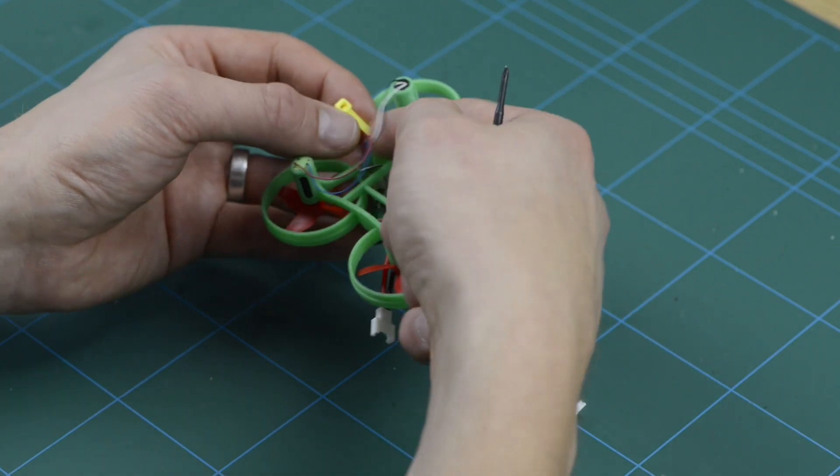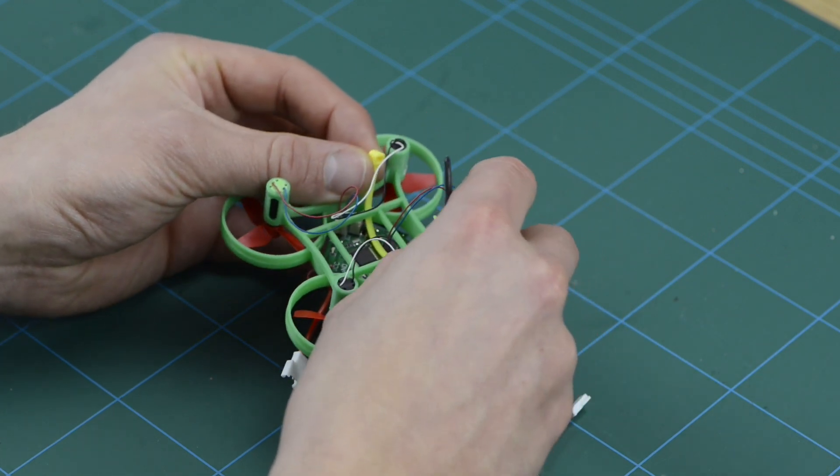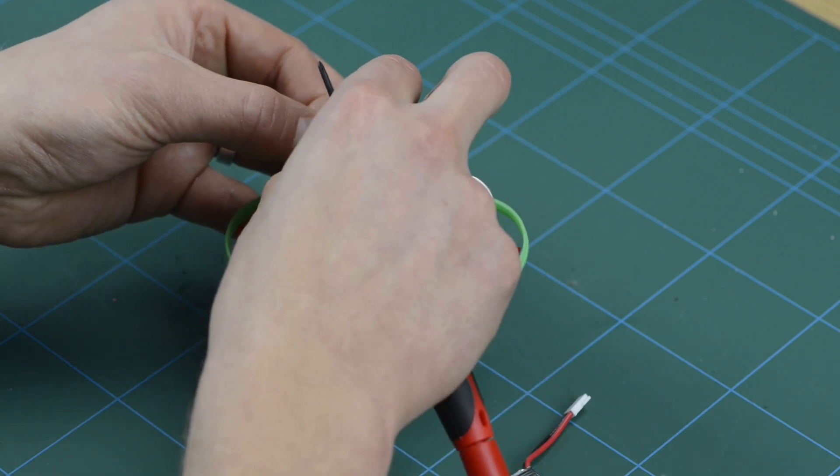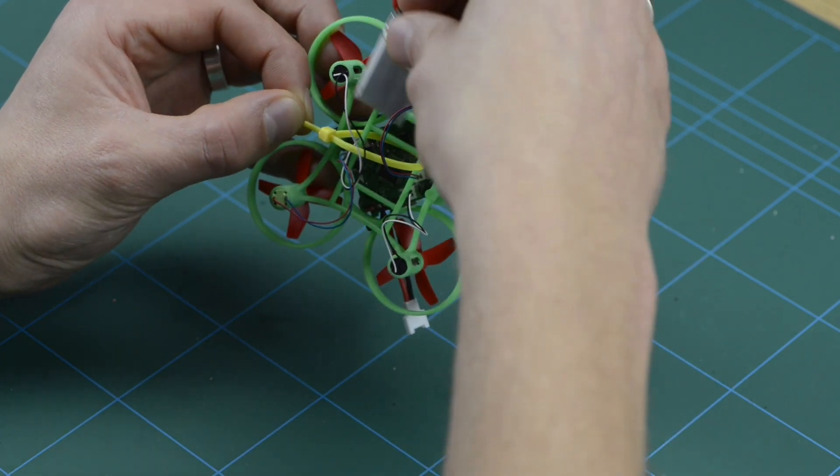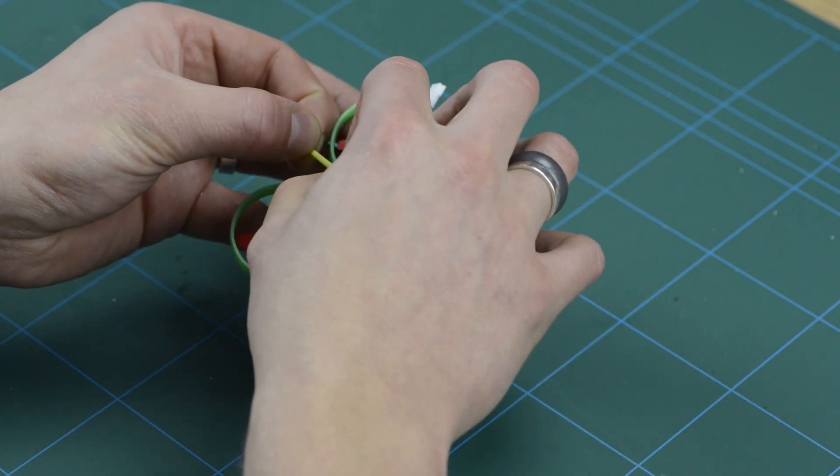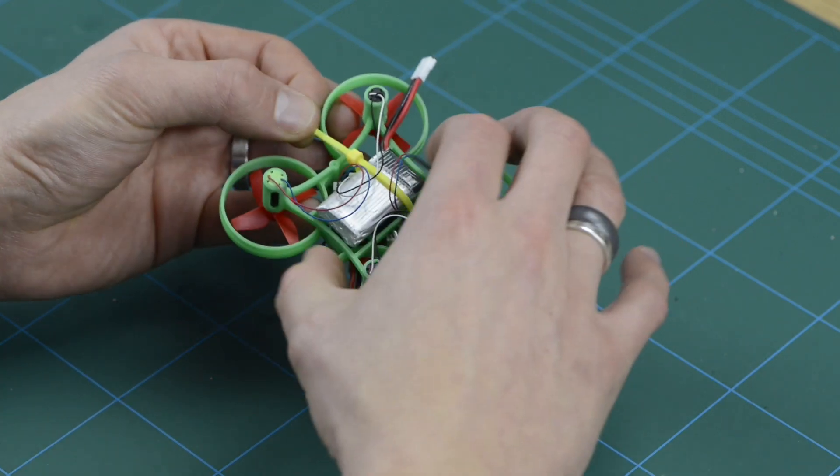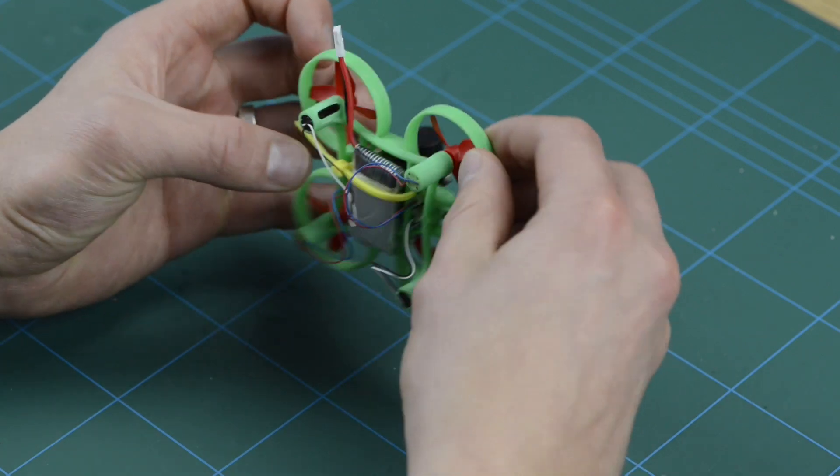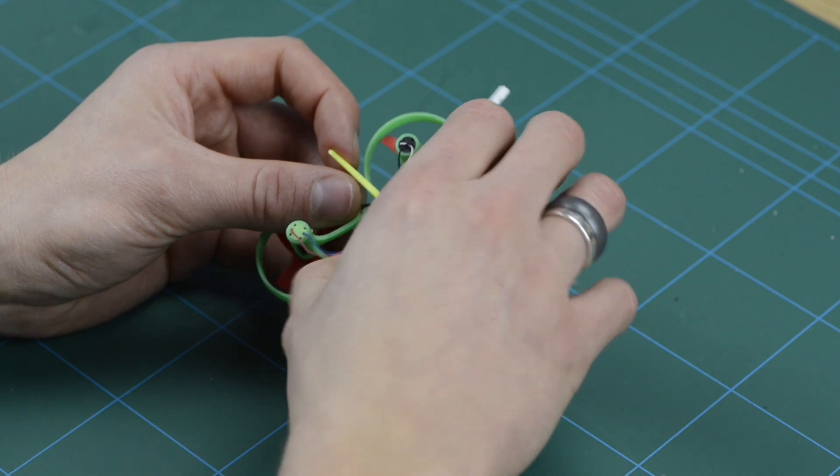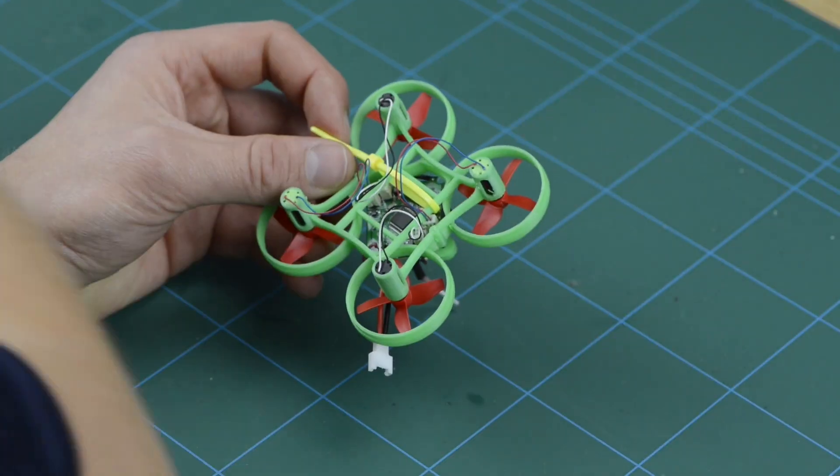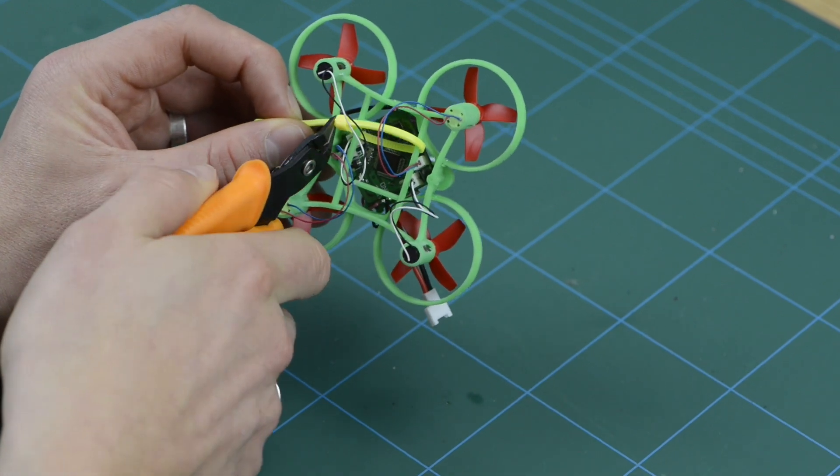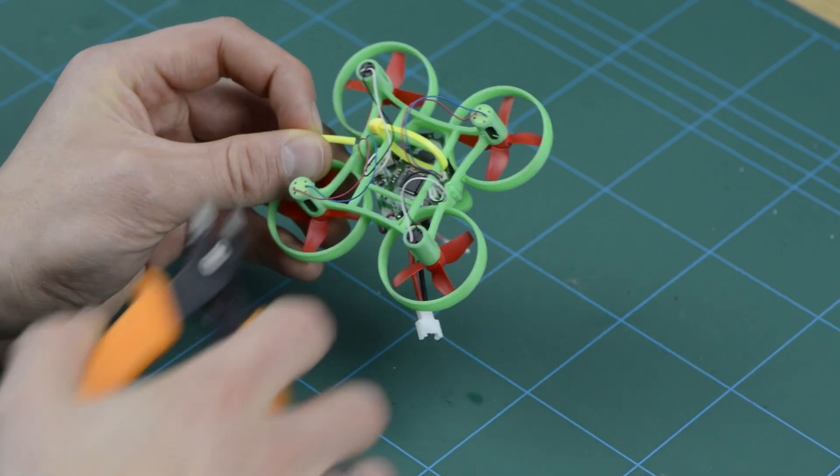And make sure that you don't foul any of the motor wires with it. And then fit your battery. And pull the cable tie. Not too tight, because you want to be able to slide the battery in and out. So tight enough so that it can retain the battery, but so that it can easily be removed as well. And then use some cutters just to remove the excess of the cable tie.